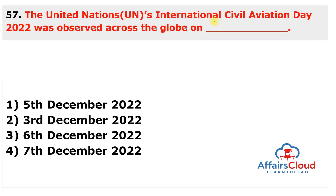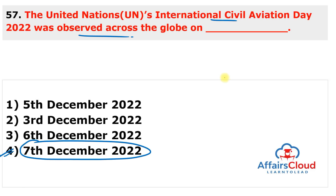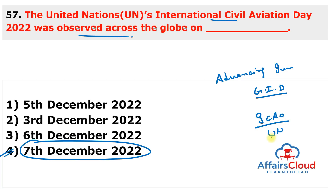Question 57: When was the UN International Civil Aviation Day 2022 observed? It was observed on 7th December 2022 with the theme 'Advancing Innovation for Global Aviation Development'. The day highlights the unique role of ICAO — the International Civil Aviation Organization, a UN specialized agency — in supporting member states to cooperate and realize the global rapid transit network.